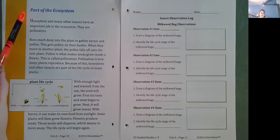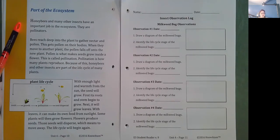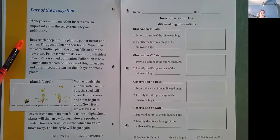Part of the ecosystem. Honey bees and many other insects have an important job in the ecosystem. They are pollinators. Bees reach deep into the plant to gather nectar and pollen. This gets pollen on their bodies. When they move to another plant, the pollen falls off onto the new plant. Pollen is what makes seeds grow inside a flower. This is called pollination. Pollination is how many plants reproduce.